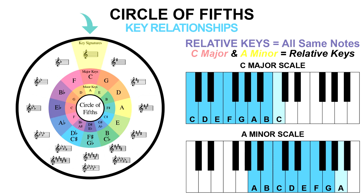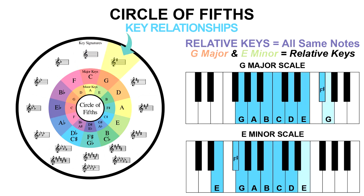Here's another example. The G major scale is G, A, B, C, D, E, F sharp, G. And the E minor scale is E, F sharp, G, A, B, C, D, and E. So once again we have the same seven notes just played in a different order. G major is the relative major of E minor, and E minor is the relative minor of G major.